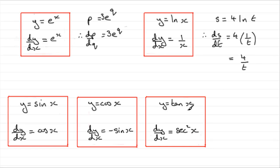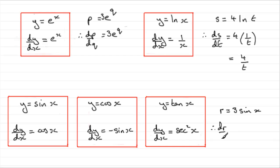And just one more example using the trig functions. If I had r equals 3 sine of x — just a single letter, not x plus 3 or anything like that — then by this formula we can see that dr by dx would equal 3 times the differential of sine x, which would be cos x. If that said sine t, it would be dr by dt equals 3 cos t, and so on.